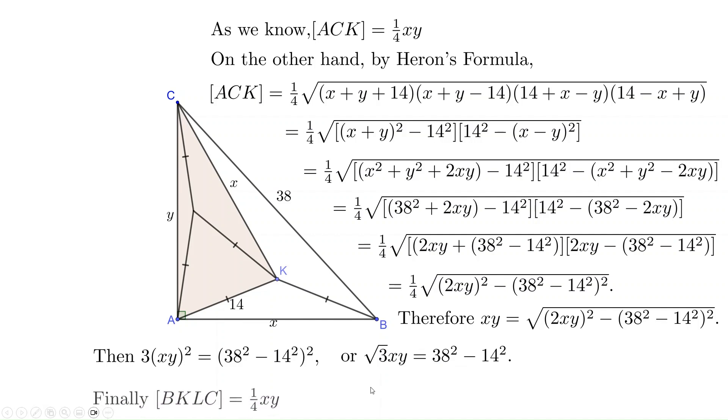And finally, the area of the quadrilateral equals 1/4 times xy, which is 1/(4√3) times (38² - 14²). You can further simplify it by reducing 4 from the bottom and reducing 2² on the top and rationalize the denominator. The job is done. Thank you for watching.